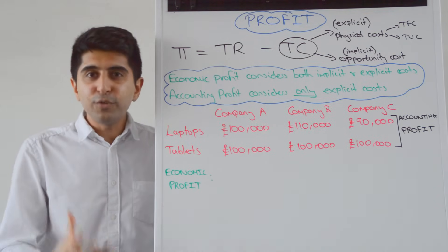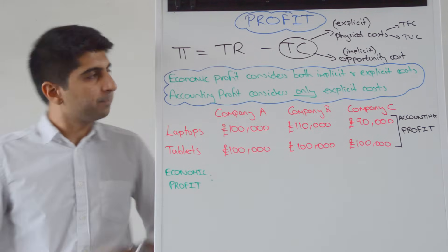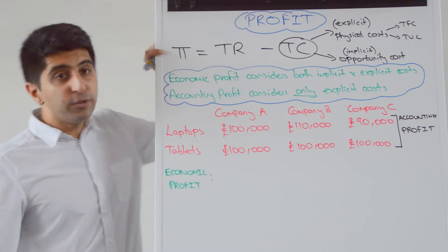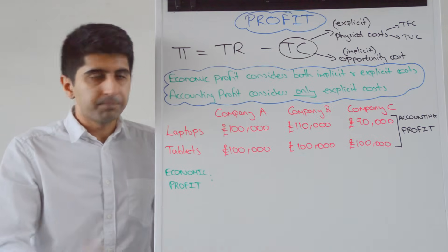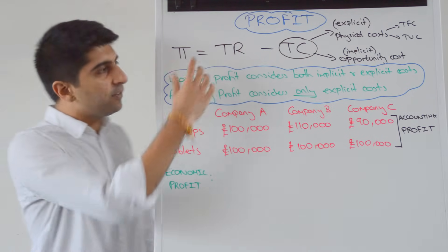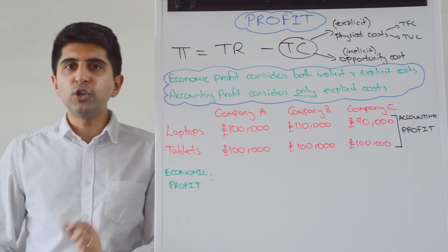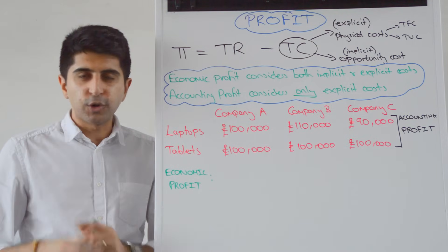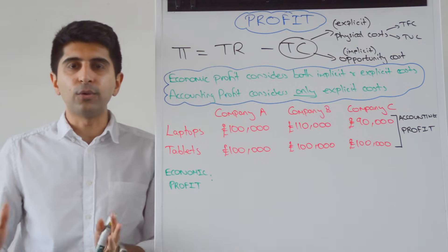Hi everybody, let's now move into the topic area of profit. We use the PI symbol to indicate profit. Profit is just this equation: total revenue minus total cost. Nothing difficult in that at all.